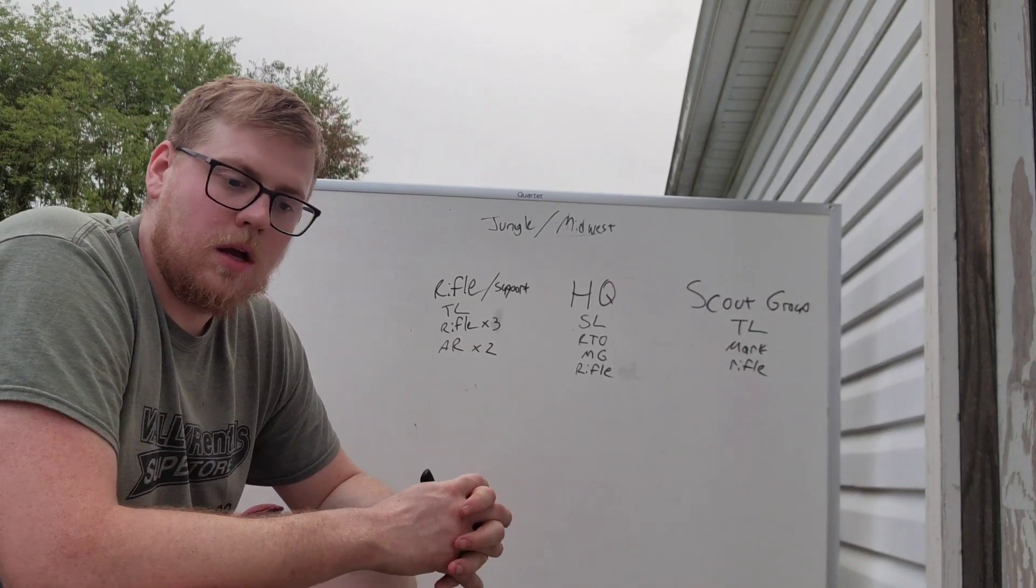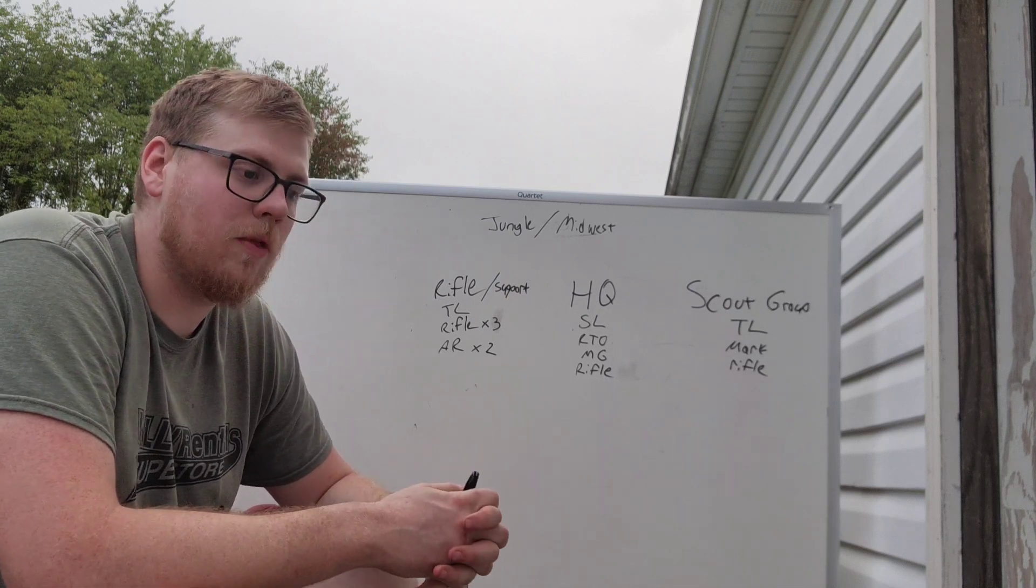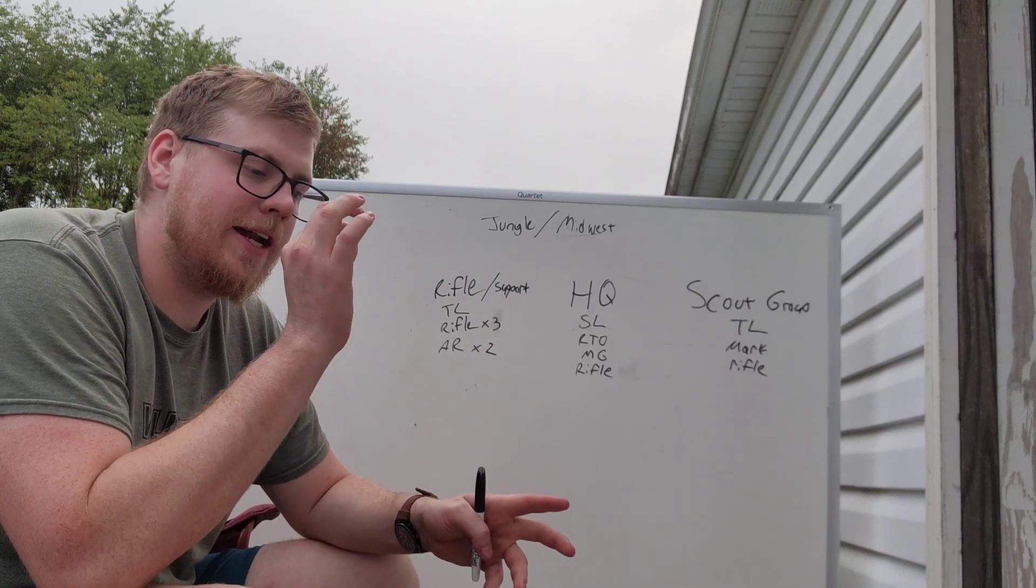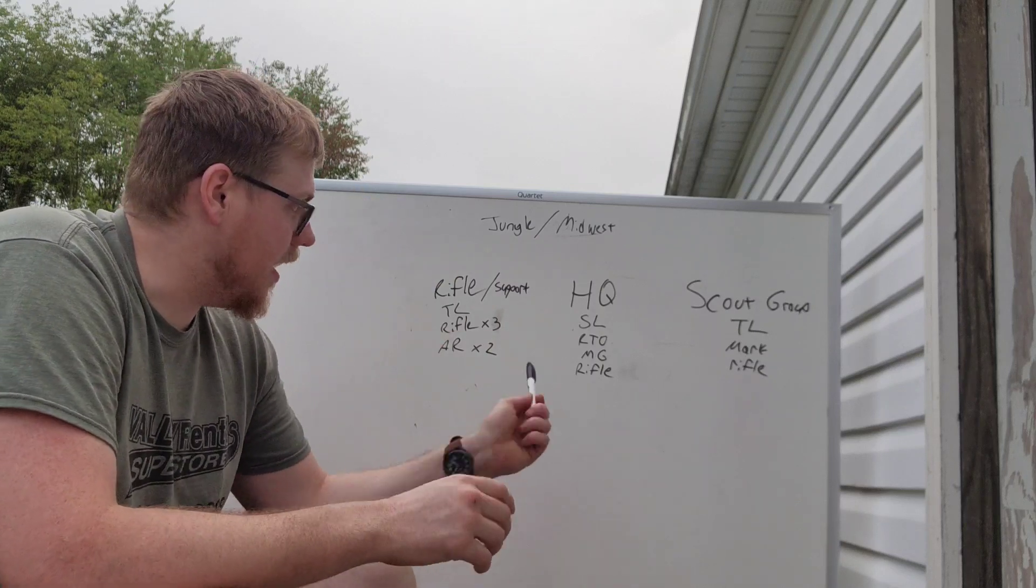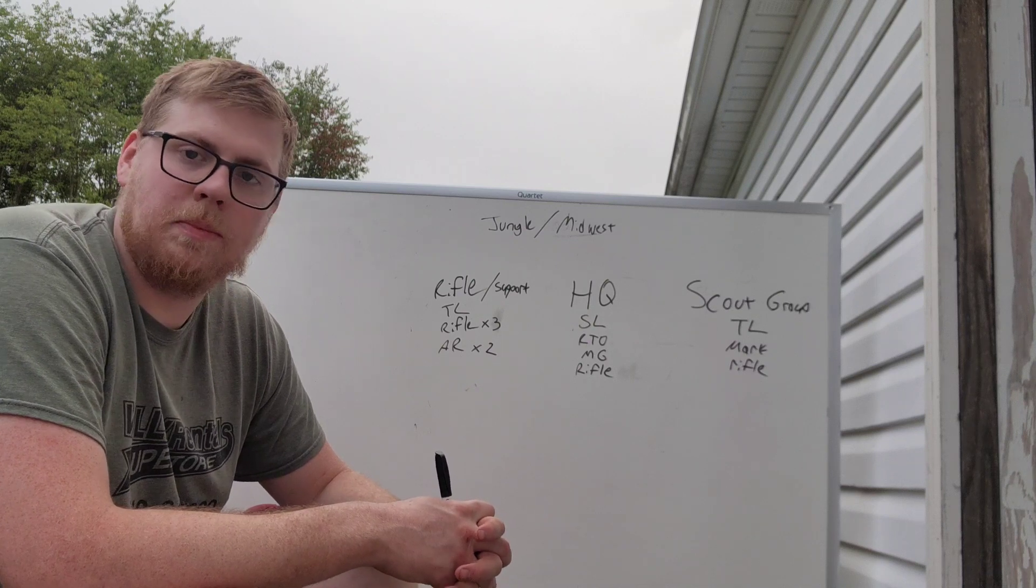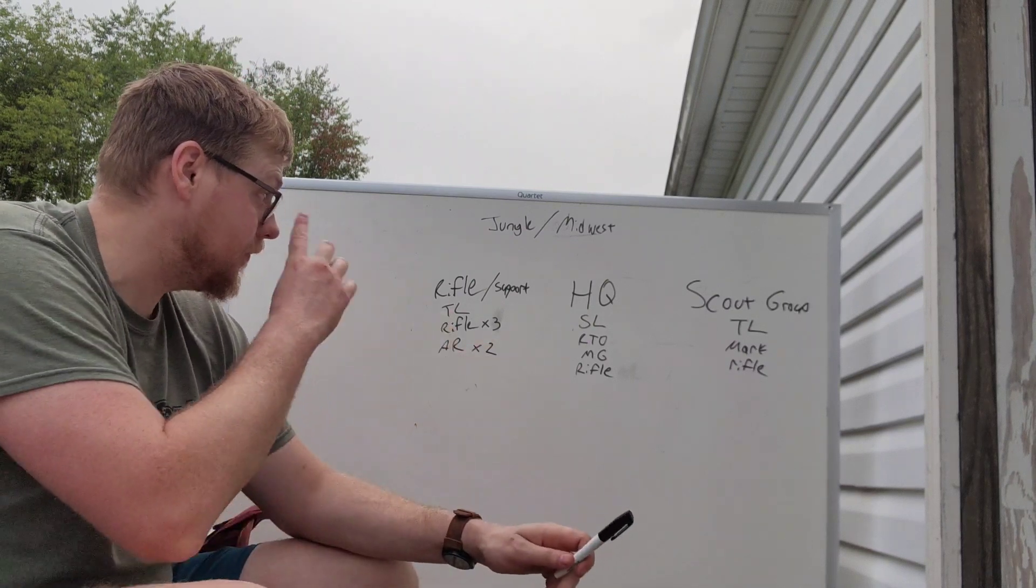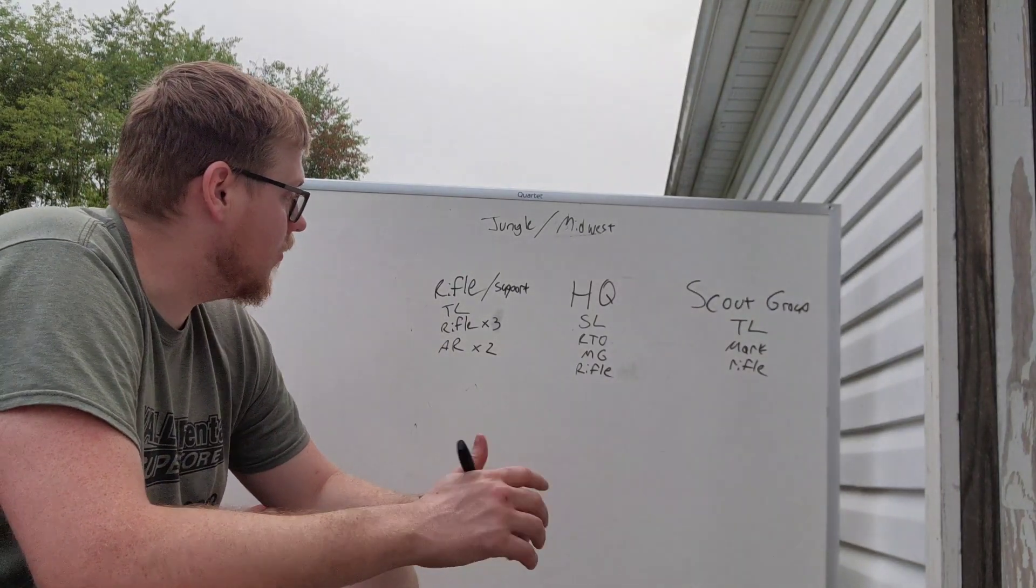Auto rifleman. Auto rifleman are the local support for the fire team. It's that simple. That is the firepower. That is local. That is in the fire team. The MG. That is the big dog. That is the big gun. That is the one that is really going to be putting people's heads down in the squad. Marksman. We've already been over the marksman. We're not going to cover it again.